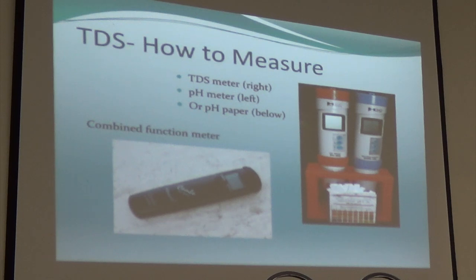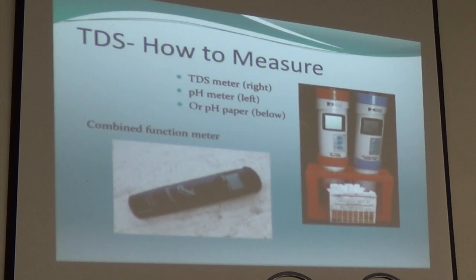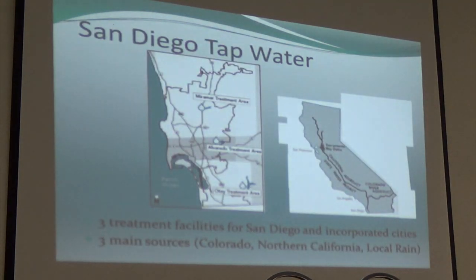The way to test pH is through a meter — this is the TDS meter, and this is the pH meter. You can also test it with pH strips. On the market you also have combined function meters that test all of those at once. A lot of those can be found at hydroponic stores, really inexpensive. The test strips are easy but really basic.